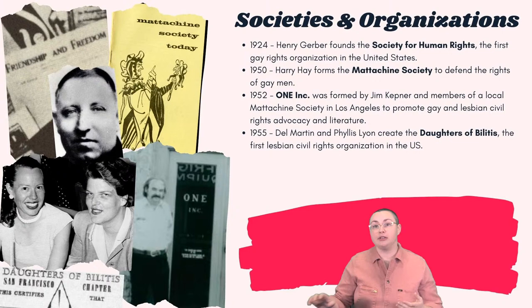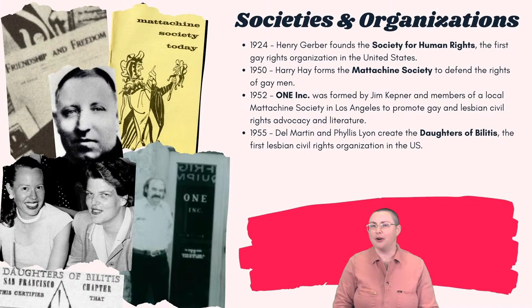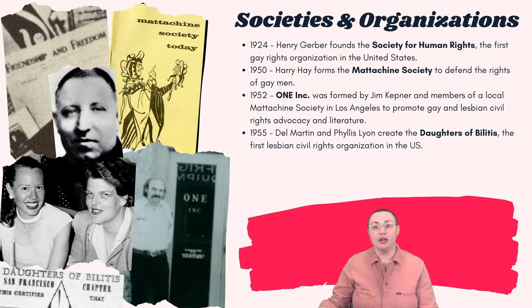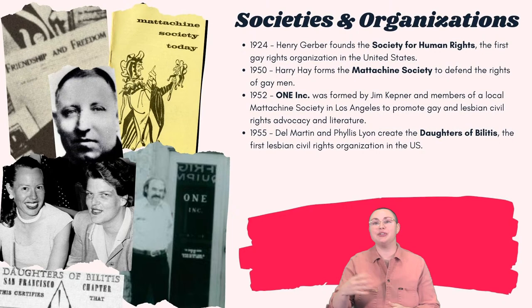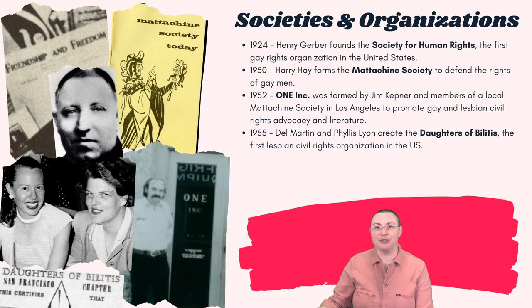In 1955, we see almost a sister organization of the Mattachine Society — created by Del Martin and Phyllis Lyon and called the Daughters of Bilitis. This was the first lesbian civil rights organization in the United States. Similar to the Mattachine Society, it offered support for women who were afraid to come out, and even began offering educational materials about gay rights and gay history. The name Bilitis refers to the Songs of Bilitis, a poem by French poet Pierre-Louis, which portrays a fictional lover of the female Greek poet Sappho.